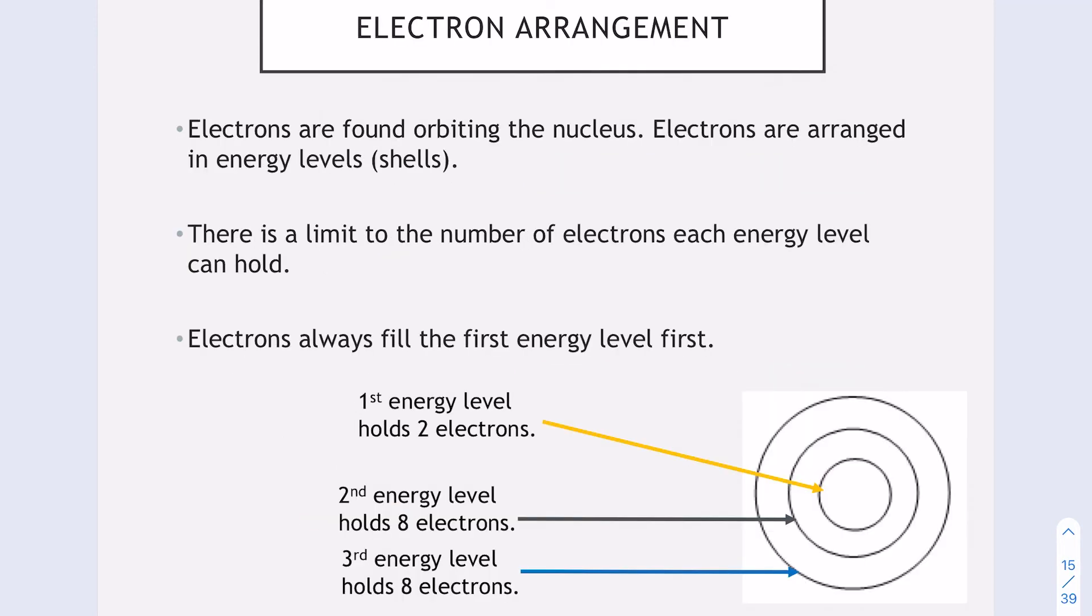If we move outside of the nucleus to the electrons, electrons are found in energy levels or energy shells. There's a limit to how many electrons each shell can have. They always fill from the first one up. I've got a little picture here with first energy level, second and third. The first energy level always holds two electrons. The second energy level holds eight, and the third energy level holds eight as well. You only need to know up to 20, and it's found in the data book on page six.